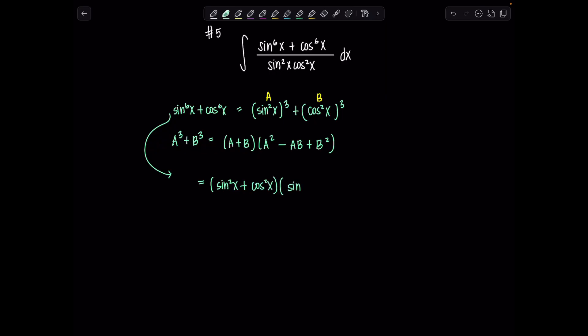Sine squared squared would be sin⁴x minus sin²x cos²x plus cos⁴x. I'm going to replace my numerator with all of this. And look at that, that's already a one. So things are simplifying like a dream.